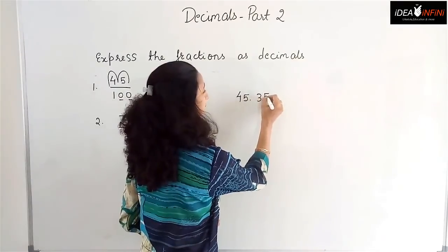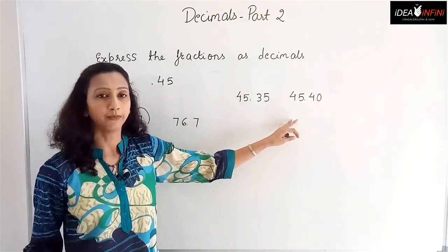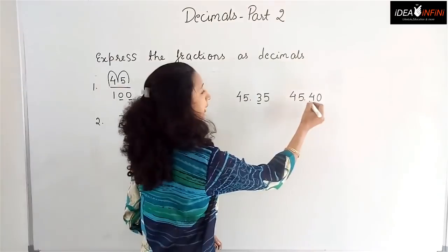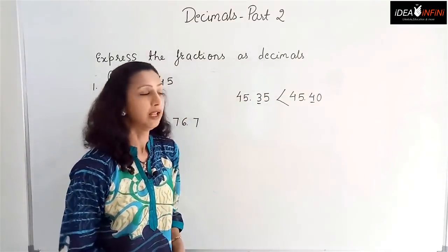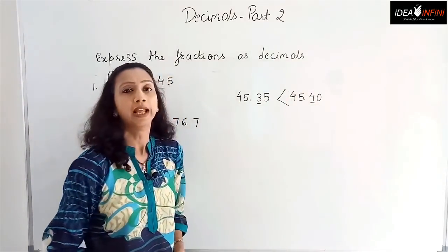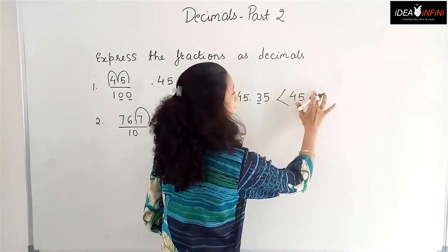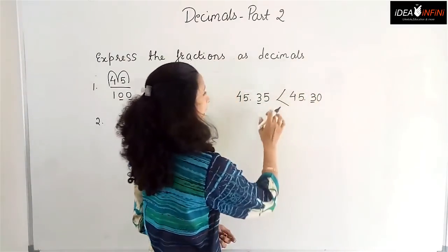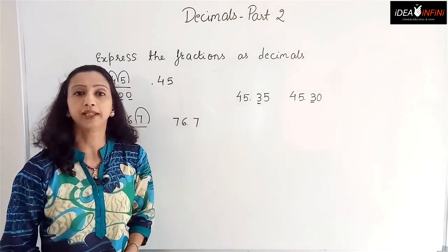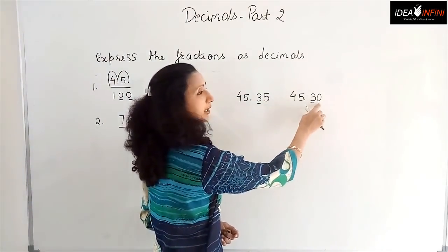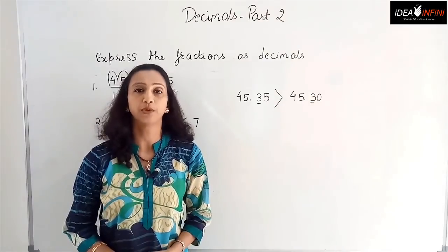For comparison of decimals, for example 45.35 compared to 45.40: when the whole numbers are the same, we compare the very first digit after the decimal point. Here it is 3 versus 4, so 45.40 is greater. If the whole number part were different, say 46, you could directly say that number is greater. If the whole numbers are equal, compare digit by digit after the decimal — for instance, 5 versus 0 means 5 is greater.